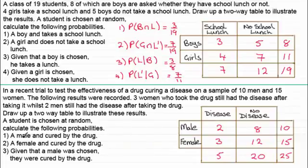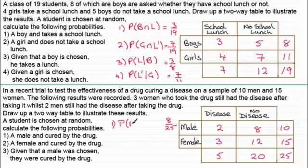Now we can work out the probabilities. For the first one, the probability that a male is chosen and cured by the drug: that's the eight men who have no disease after taking the drug, out of a total of 25. So that's eight out of 25. In set notation you'd write P(Male ∩ D'), where D' means no disease, and that equals eight twenty-fifths.